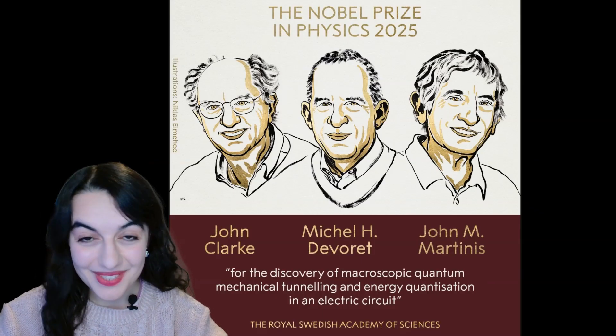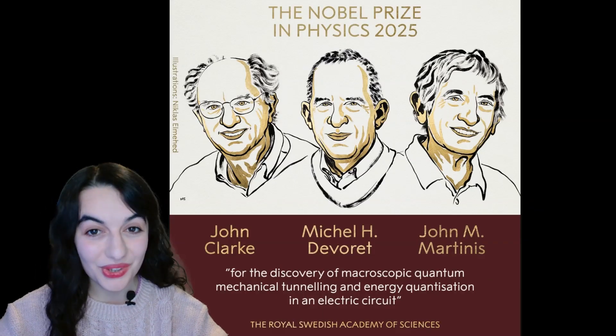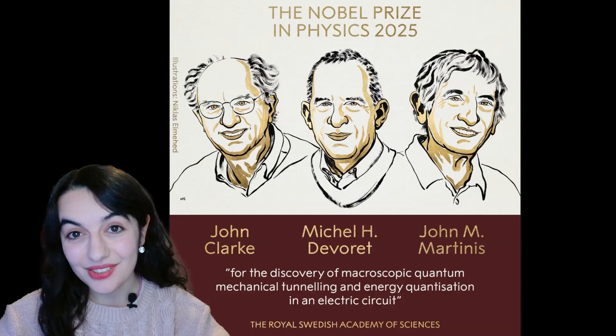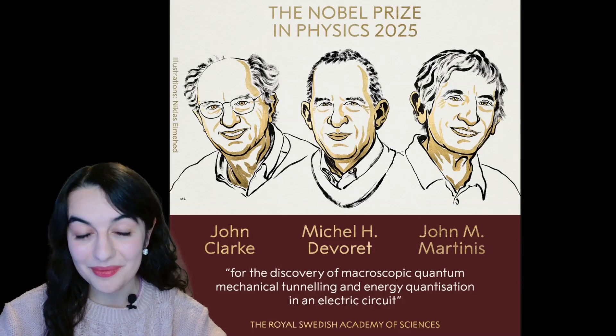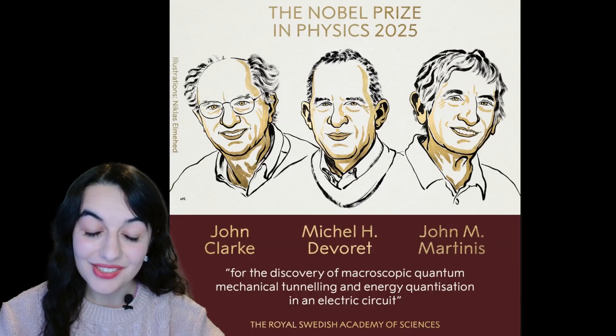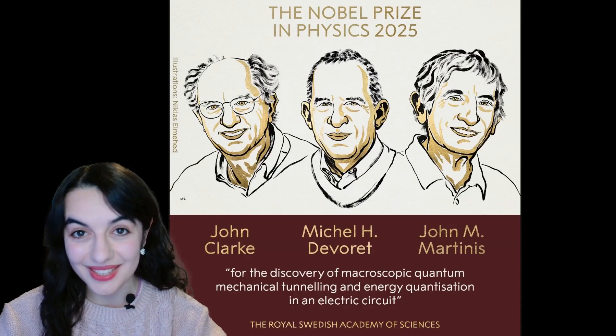This year the Physics Nobel Prize went to John Clarke, Michel Devoret and John Martinis for their work on the discovery of macroscopic quantum mechanical tunneling and energy quantization in an electric circuit.